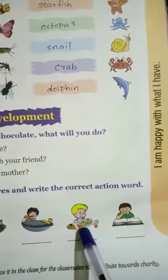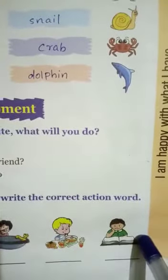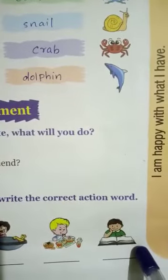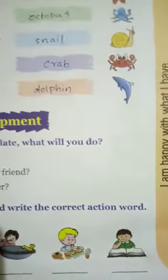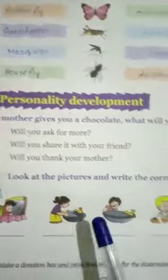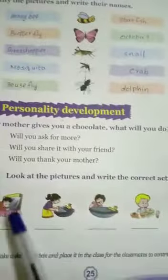What is this boy doing? He is eating. Spelling: E-A-T-I-N-G, eating. Next, what is this boy doing? He is reading. Reading, reading. Now we will correct it: sleeping, washing, brushing, and eating.